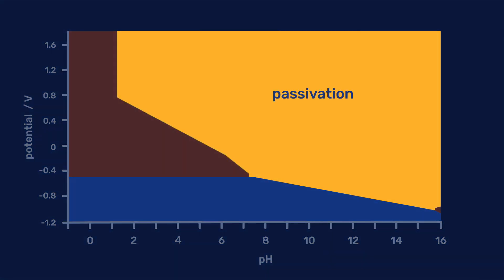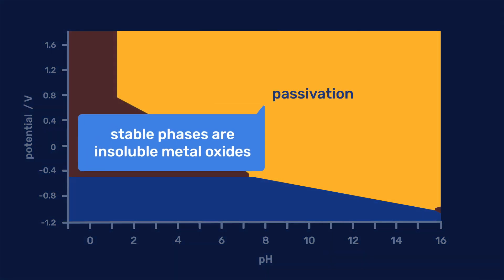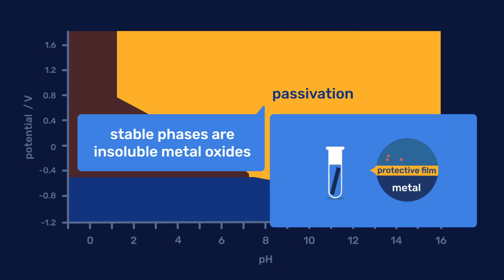In the passivation region, the stable phases are insoluble metal oxides. In such cases, however, the oxidation products may form a film on the metal surface, possibly protecting it from further oxidation. The effectiveness of this passivation is highly dependent on the porosity of the metal oxide film and on how well it adheres to the metal surface.